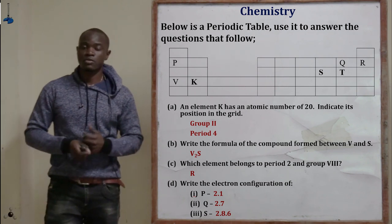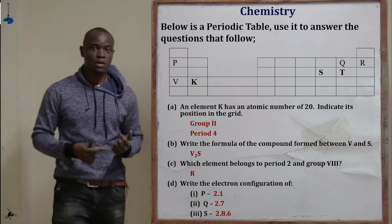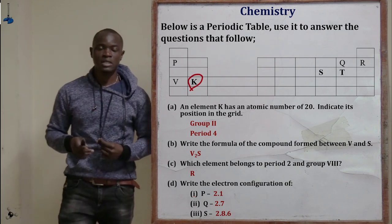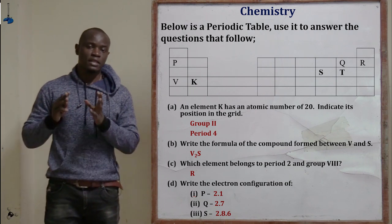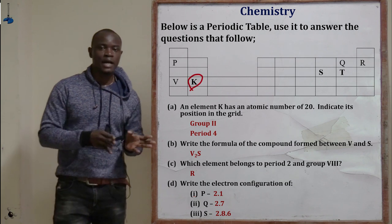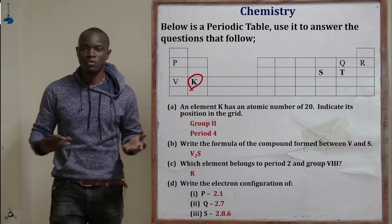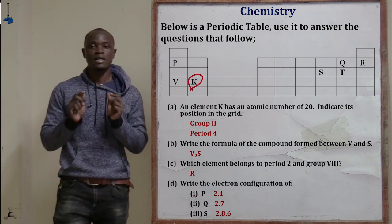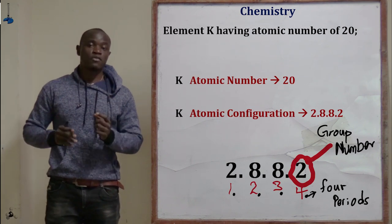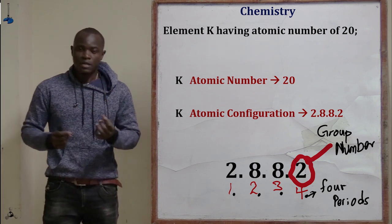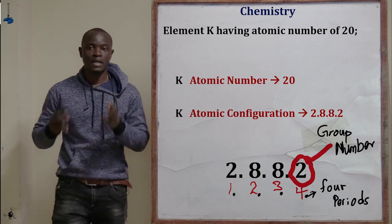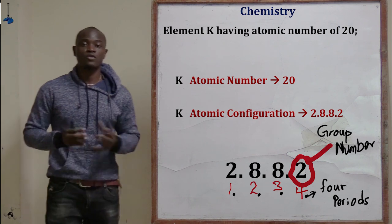The first question about the periodic table asks: element K has atomic number 20 — indicate this on the grid. To find where element K belongs, first write its electronic configuration. Since element K has atomic number 20, its configuration is 2, 8, 8, 2.